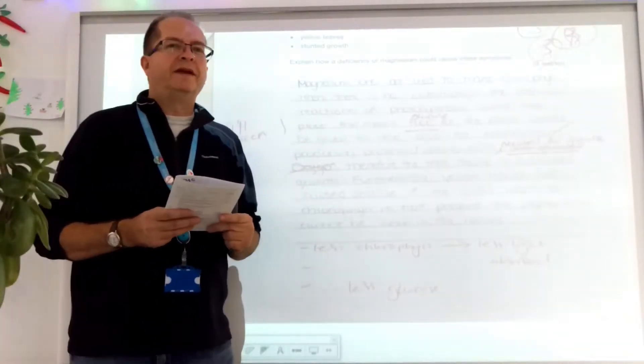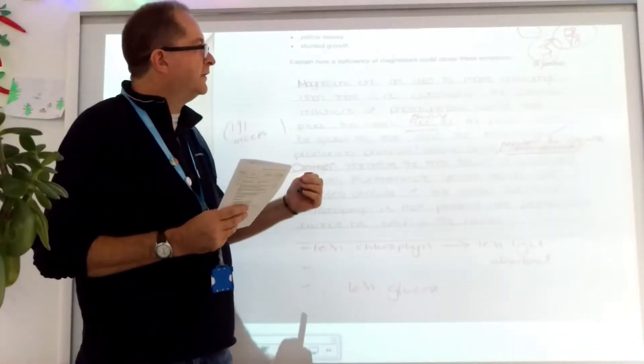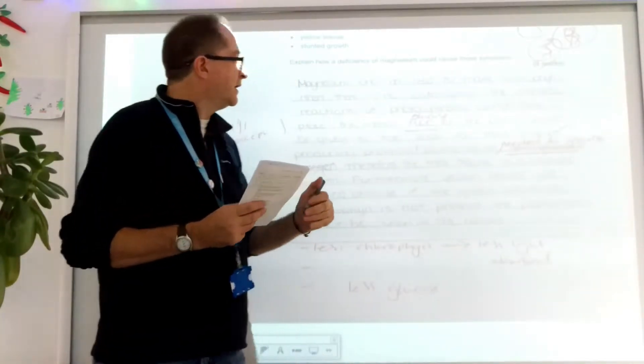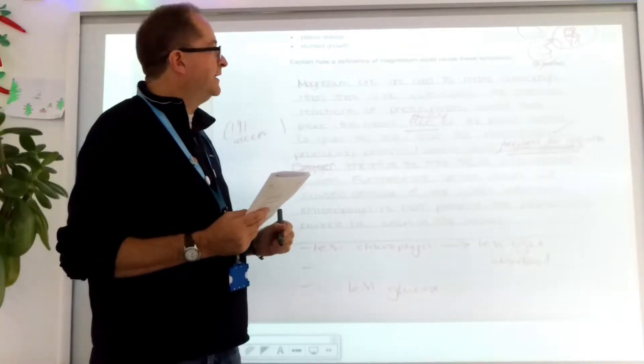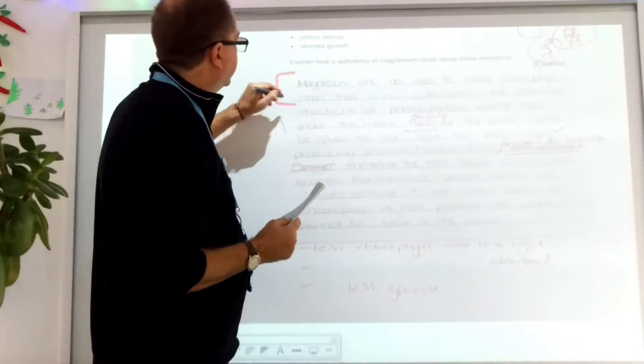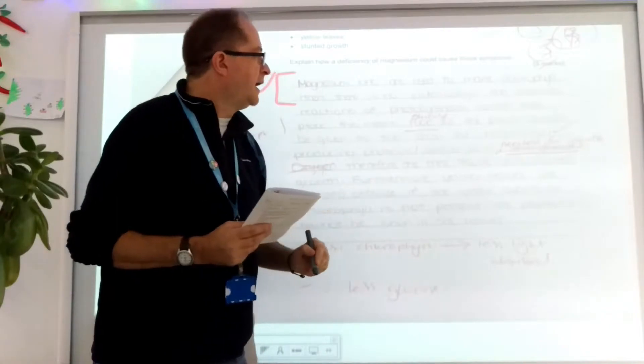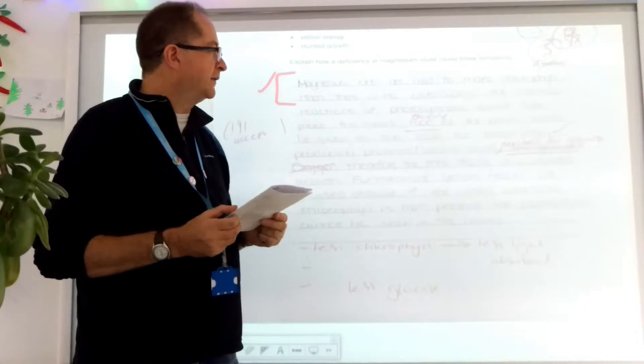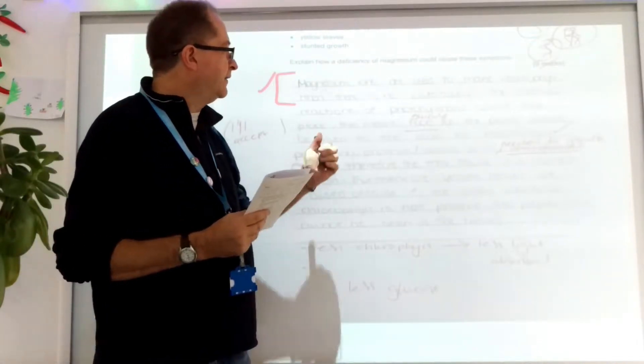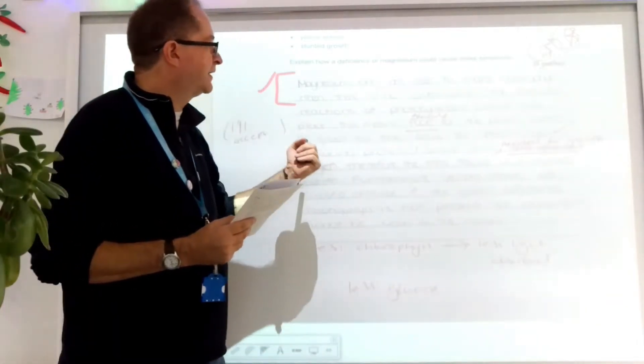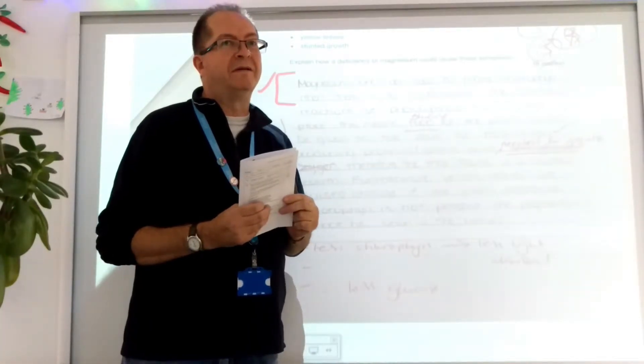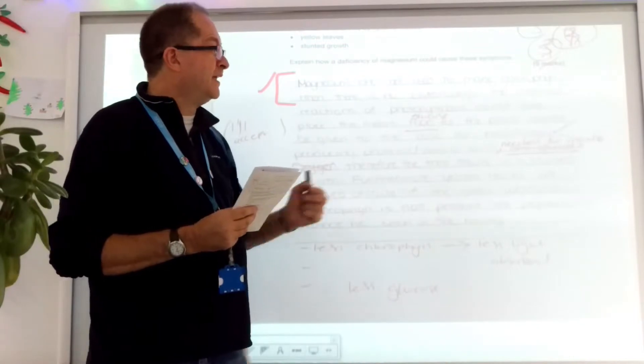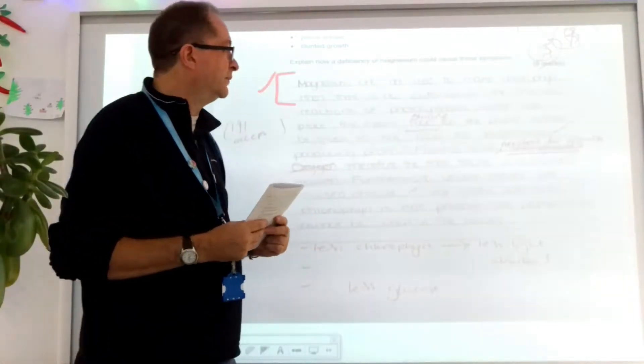Let's see how this next student did. Examiner's written all over this one. They've given it three marks out of five. Let's see what they did do and didn't do. They've got the first bit. Magnesium ions are used to make chlorophyll. So that's the first mark. Good. If there's no chlorophyll, the chemical reactions of photosynthesis cannot take place. And this means food for the plant cannot be given to the cells for respiration. It's not really about that. It doesn't come up on the mark scheme. If only they had written glucose instead of food, that would have helped as well.